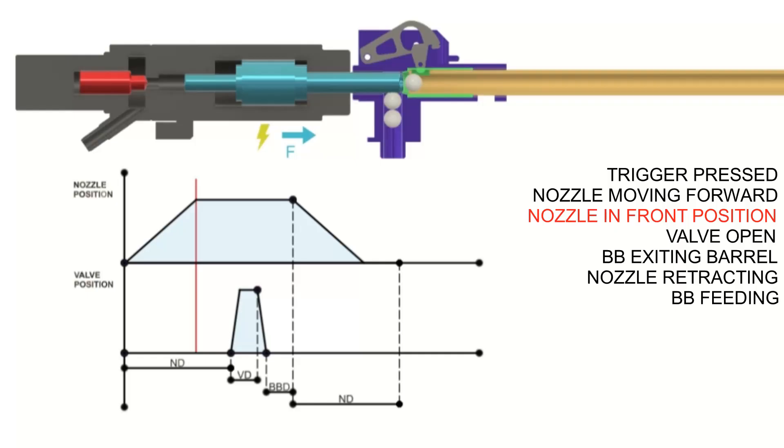For this purpose, it is good to have extended nozzle dwell time to be sure the BB is loaded fully inside the chamber and the seal is good. Because if you have a low battery voltage or high magazine spring force, the nozzle will be slower and thus will take longer time.